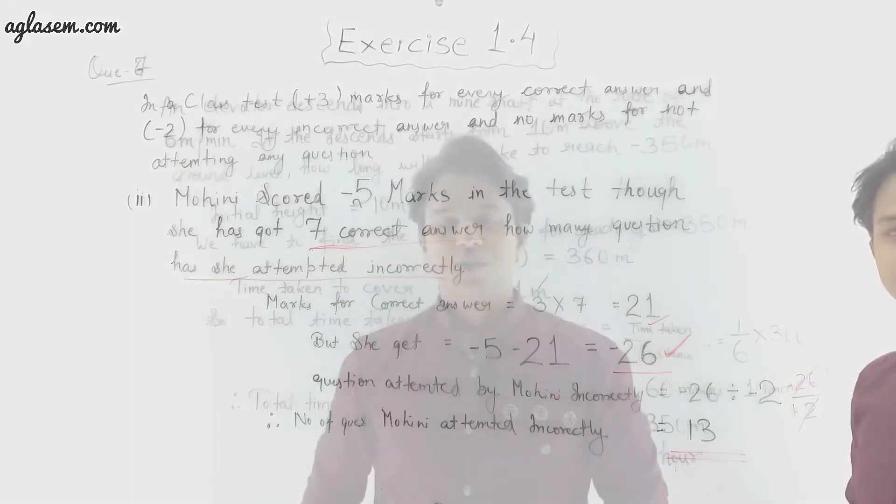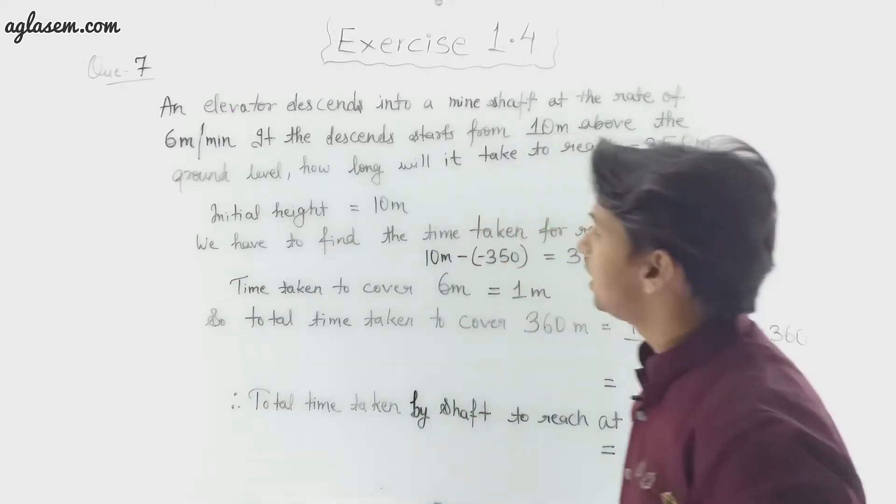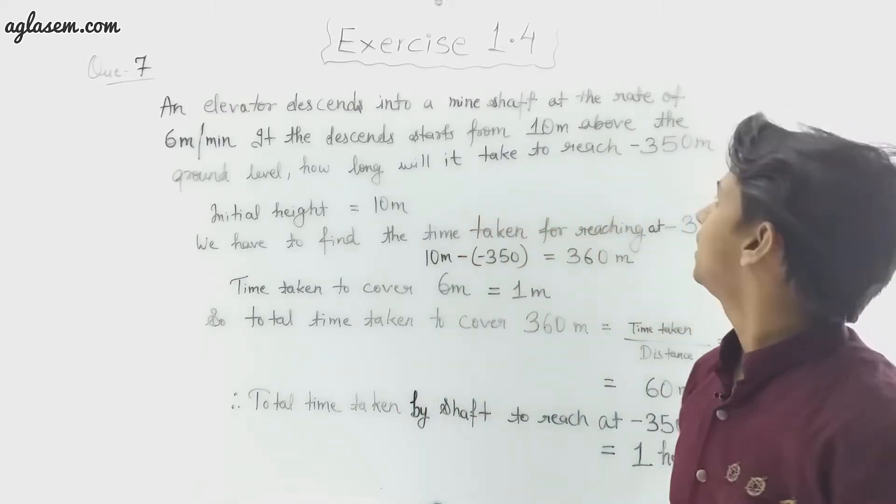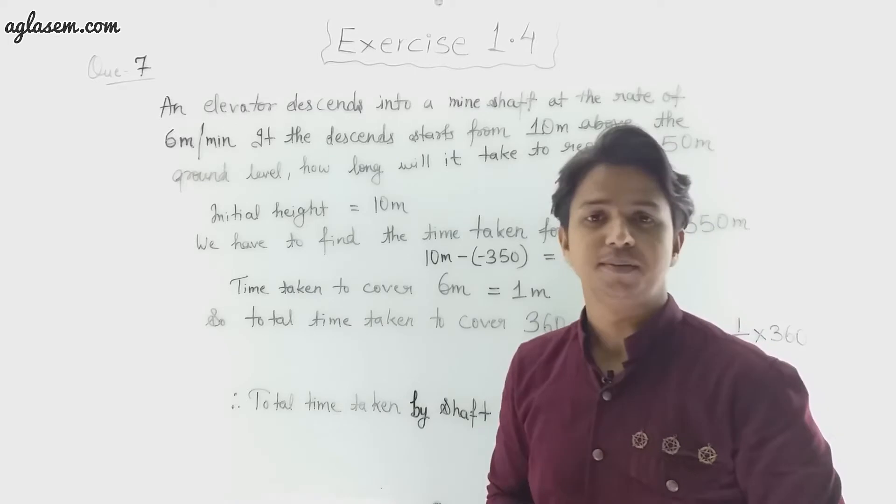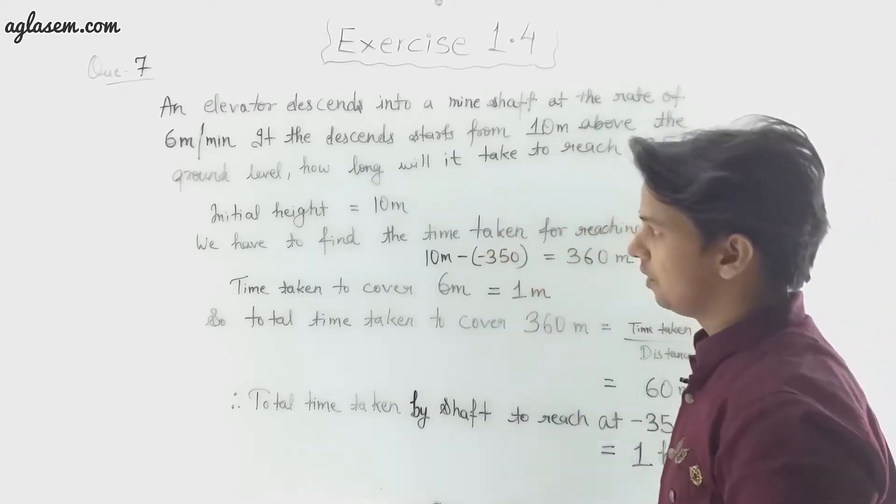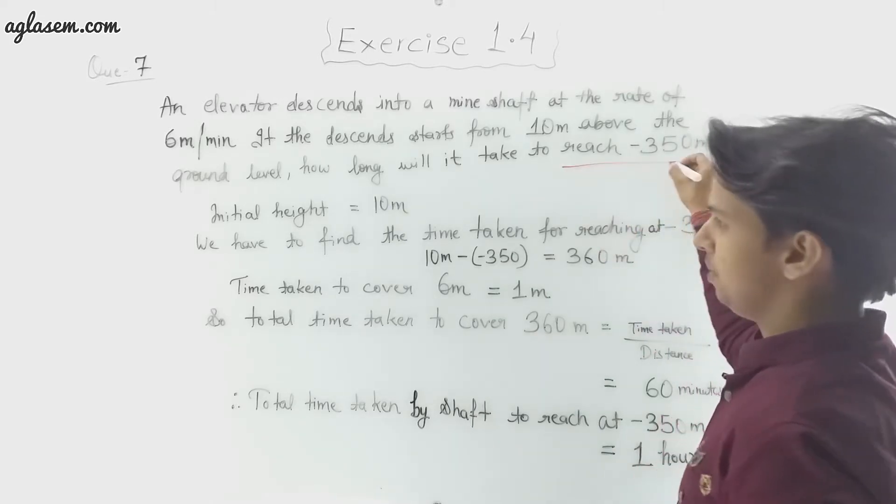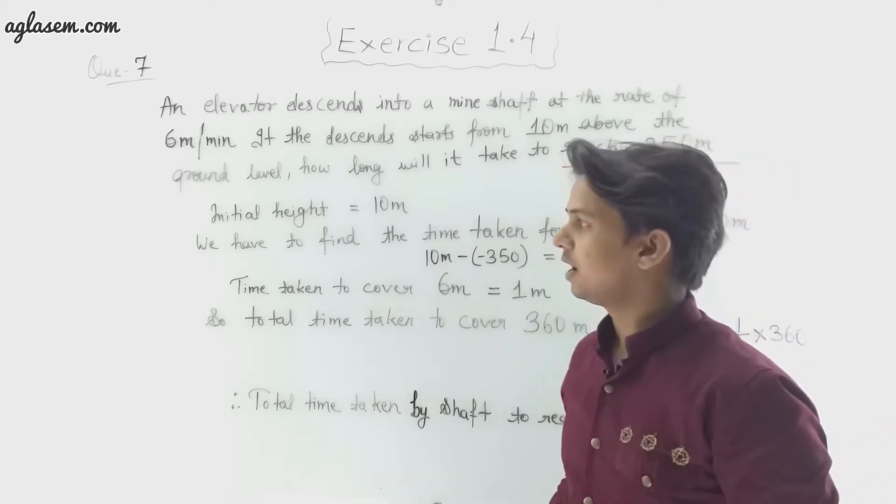Now let's come to question number 7. Question number 7 says: An elevator descends into a mine shaft at the rate of 6 meters per minute. If the descent starts from 10 meters above the ground level, how long will it take to reach -350 meters? Let's start with the solution.